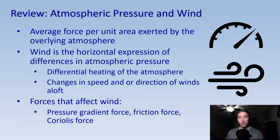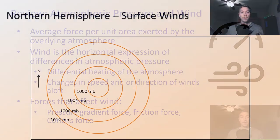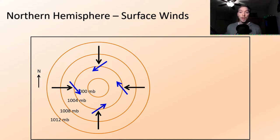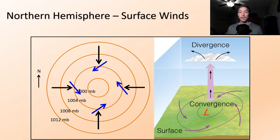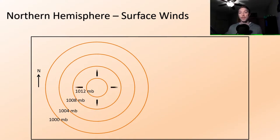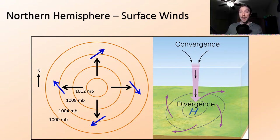In low pressure systems, the pressure gradient force is directed towards the center of lowest pressure, while the Coriolis force leads to rotation of the system and friction opposes that movement. We generally see this as a counterclockwise rotating system with converging winds on the surface and diverging winds aloft. In high pressure systems, winds are deflected outward by the pressure gradient force in a clockwise direction, with diverging winds on the surface and converging winds aloft.